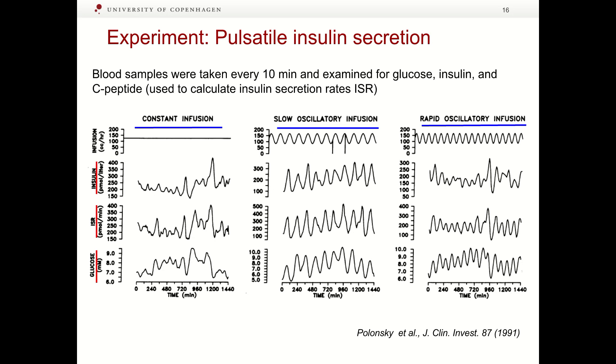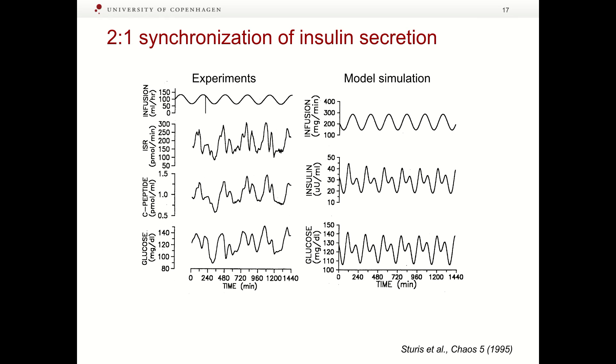If the period of external forcing becomes longer, one can observe that internal glucose and insulin concentrations become locked to the forcing frequency in 2-to-1 synchronization. This implies that pancreas delivers 2 pulses of insulin for each peak in the external forcing.